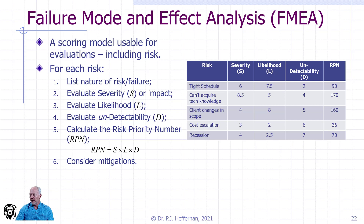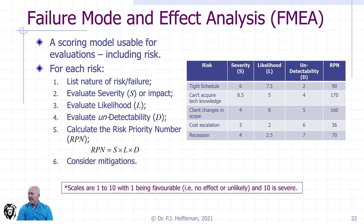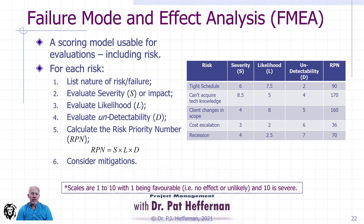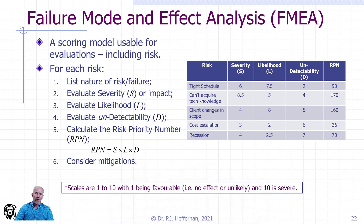From there, we can decide which risks to target for mitigations, avoidance, or other risk strategies. It's a fairly simple method — we've already considered non-numerically our probability and impact, and now we add undetectability and assign numbers, giving us an aggregate comparator so we can see numerically which risks are of the most concern.